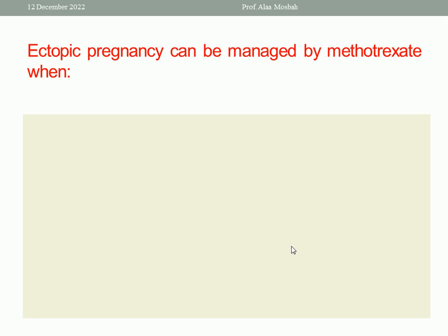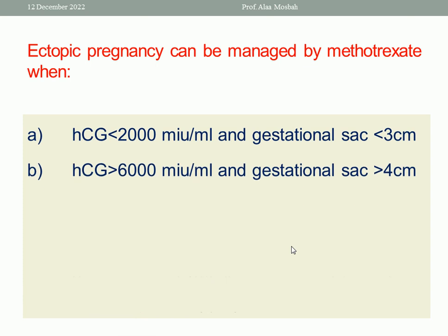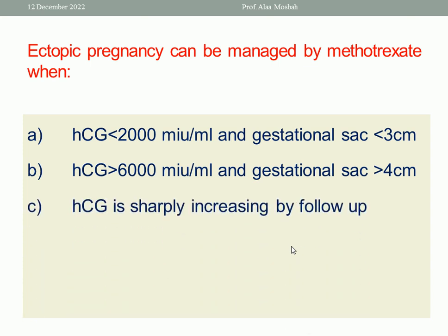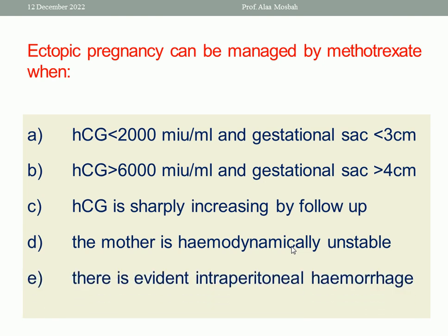Ectopic pregnancy can be managed by methotrexate when — A: hCG level is less than 2000 milli-international units per millilitre and the gestational sac is less than 3 cm. B: hCG more than 6000 and sac more than 4 cm. C: hCG is sharply increasing on follow-up. D: the mother is haemodynamically unstable. E: there is evident intraperitoneal haemorrhage. The best response is A.